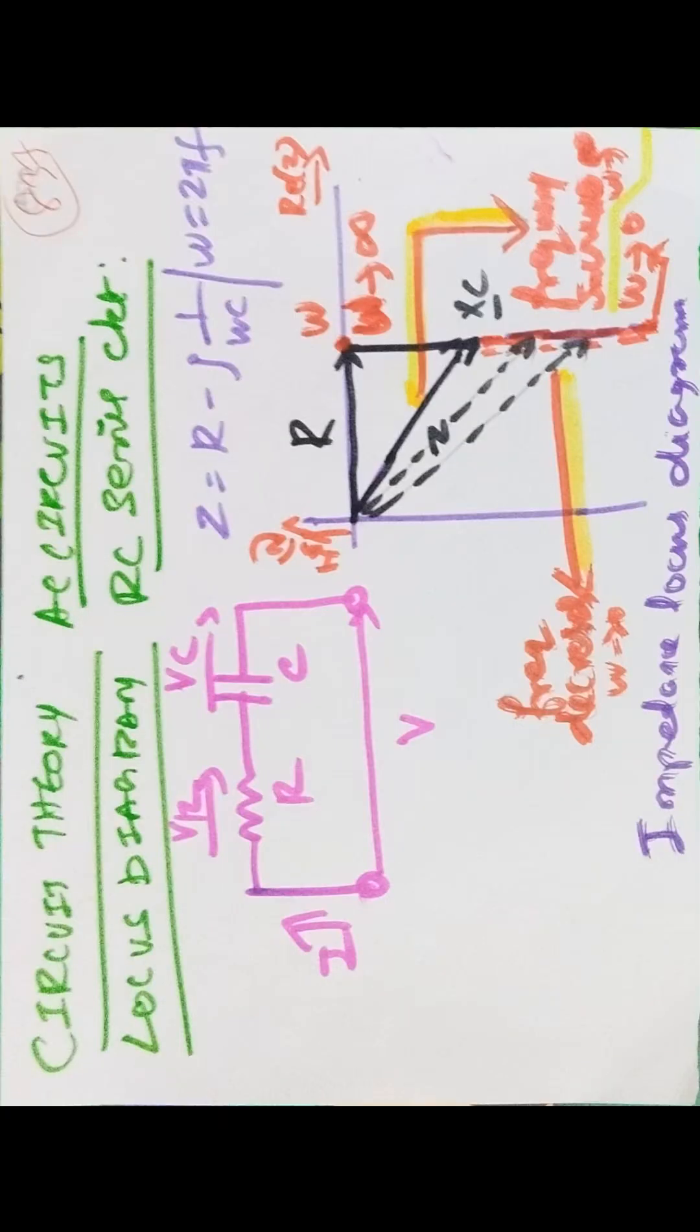Circuit theory. Good morning to all. This is RC series circuit locus diagram. The circuit shown in figure consists of R and C in series format. VR, VC, and VR. The current is I. Z is equal to R minus j(1/ωC), where omega is equal to 2πf.